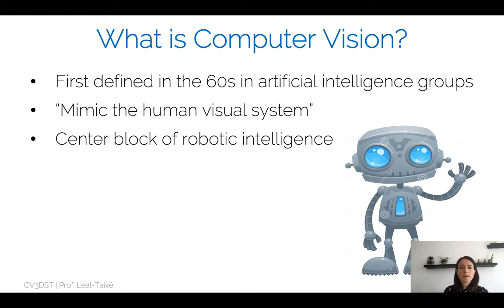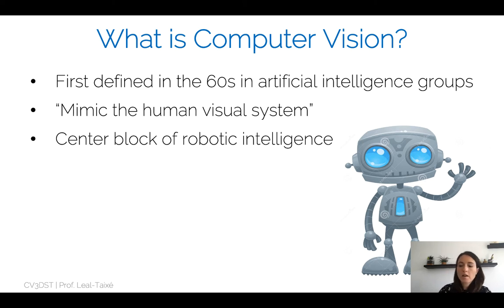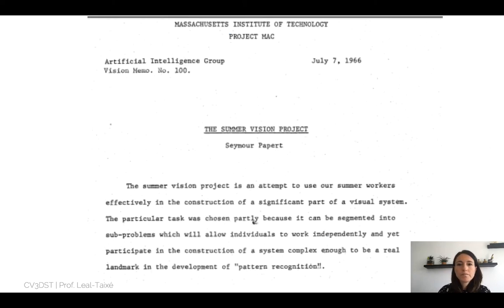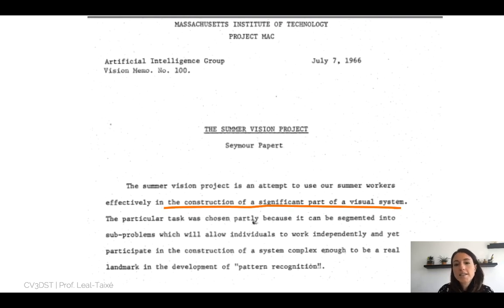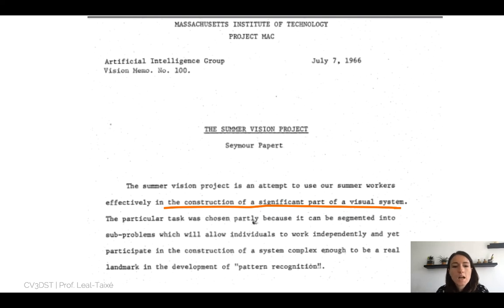We can imagine a robot navigating around the environment — it needs to have a pair of eyes that understands the environment, looks around and understands what is happening. This was defined actually in 1966 as a summer vision project — something quick to be developed and solved in a summer, three months. In one summer, they wanted to construct a significant part of the visual system, essentially solve computer vision.